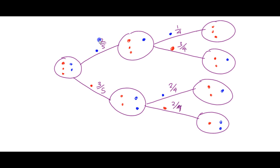Notice what each set of branches adds up to. Two-fifths plus three-fifths equals one. One-quarter plus three-quarters equals one. Two-quarters plus two-quarters equals one. So in each branch, the probabilities coming off a node must add up to one — it has to account for all possibilities. Either it's blue or it's red; it can't be anything else.